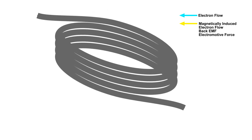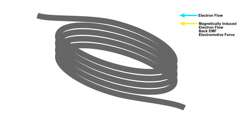Here is a coil of wire. And this is just one wire, but as you can see, it has been wound around. And let's see what happens when we put an AC source onto this. Now AC, it's going to alternate from positive to negative, and our magnetic field is always going to be in motion.